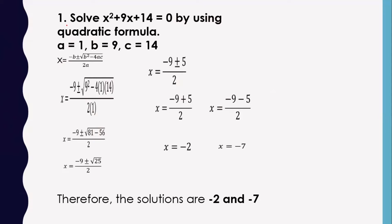Example number 1: x squared plus 9x plus 14 is equal to 0. We have to get the solution of the quadratic equation by using the quadratic formula. The first thing you do is determine the values of a, b, and c. Here, the value of a is 1, which is the numerical coefficient of the quadratic term or the first term. We have x squared, so we have an invisible 1.